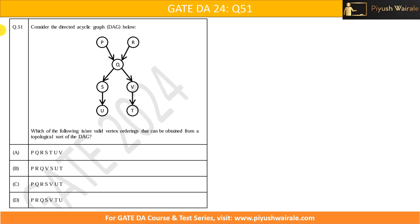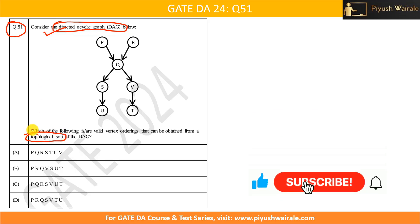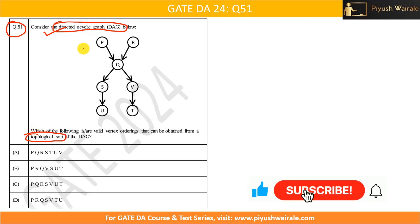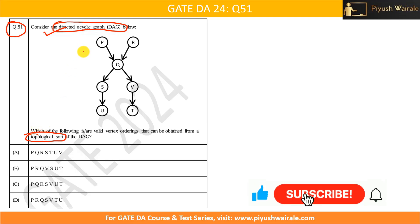Hello everyone. In this particular video, we are going to discuss question number 51 of the GATE DA24 exam. This question is based on directed acyclic graph. We already discussed what is directed acyclic graph and what is topological sorting in the previous videos. Let's try to discuss this particular question.